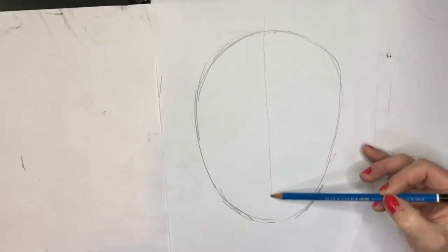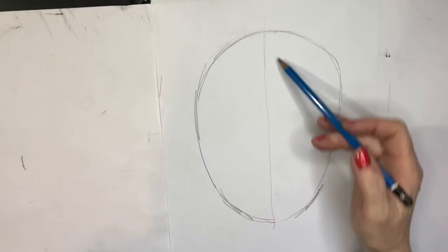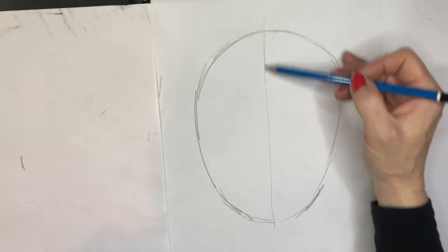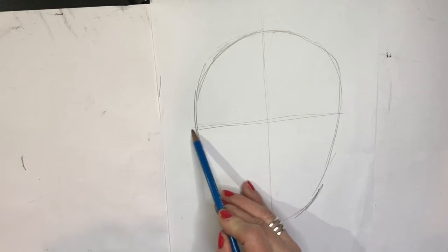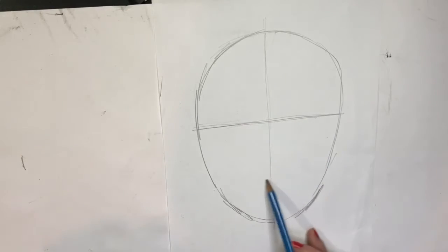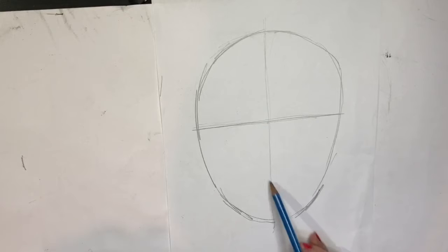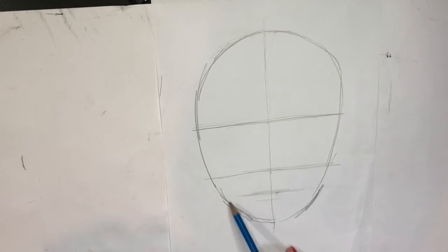What you can do then is start to add your line of symmetry and then just above halfway height draw in a line. This is where your eyes are going to be. Halfway between there and there is approximately where your nose is going to be. Halfway between there and there is where your lips are going to be.